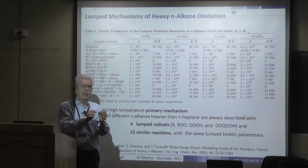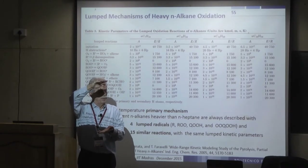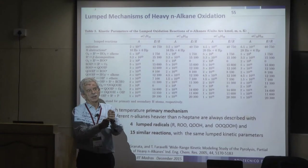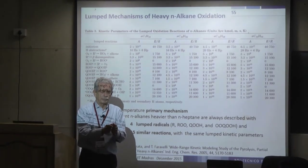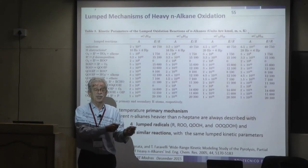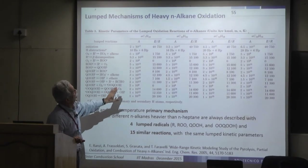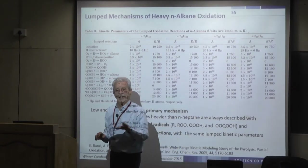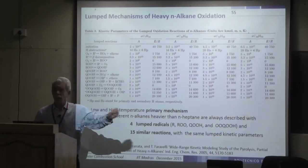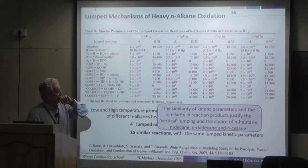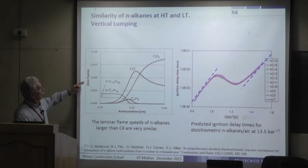Only a few relative weights of alternative reaction paths need to be fixed — for example, beta decomposition versus oxygen addition. Importantly, all normal paraffins from C10 to C16 behave in a very similar way: the kinetic parameters are practically the same across the entire series. This confirms the similarity observed previously and justifies the lumping approach for the entire homologous series.